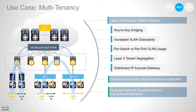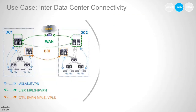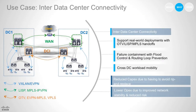The second use case is inter-data center connectivity. Programmable fabric provides you with a rich handoff to well-known, well-established, mature data center interconnect technologies like OTV, LISP, and MPLS. It helps you provide very good DC edge controls, providing you failure containment as well as scale containment. So if you have a misbehaving VM in one data center, it does not affect your other data center.